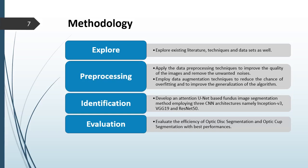This is the methodology of our research. In the first step, we explore the existing literature, techniques and datasets. Then, in the pre-processing step, we apply data pre-processing techniques to improve image quality and remove unwanted noise. Next, we employ data augmentation techniques to reduce the chance of overfitting and improve the generalization of the algorithm. As the third step, we develop an attention U-Net-based fundus image segmentation method employing three CNN architectures: Inception-V3, VGG-19 and ResNet-50. Finally, we evaluate the efficiency of optic disc and optic cup segmentation with the best performances.